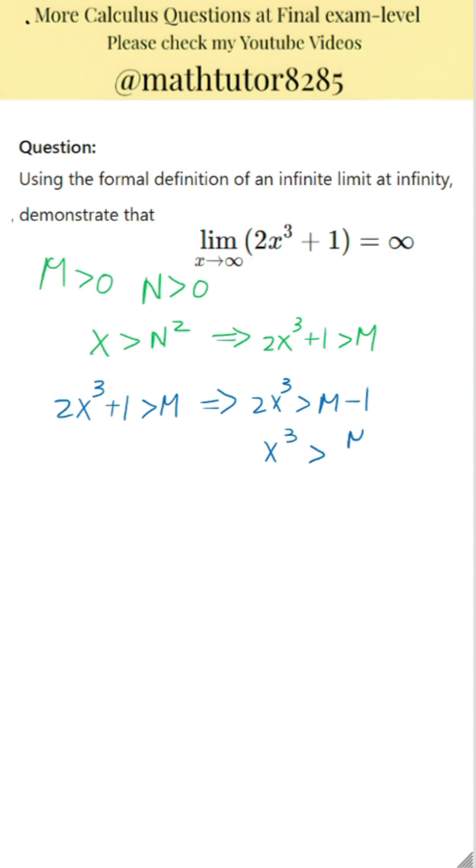Now divide both sides by 2. This gives x cubed is greater than the quantity M minus 1 divided by 2.